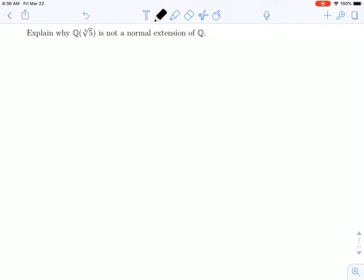Recall the idea of a normal extension. One way to think about it is that if you had an extension E over F, this was normal if E is the splitting field of some polynomial in F adjoin x. So splitting fields are always normal extensions, and normal extensions are always splitting fields.